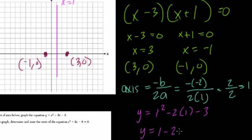So y equals 1 minus 2 minus 3. 1 minus 2 is negative 1. Minus 3 is negative 4. So what does that mean? Well, when x is 1, y is negative 4. That's our vertex. That's the final point we need.